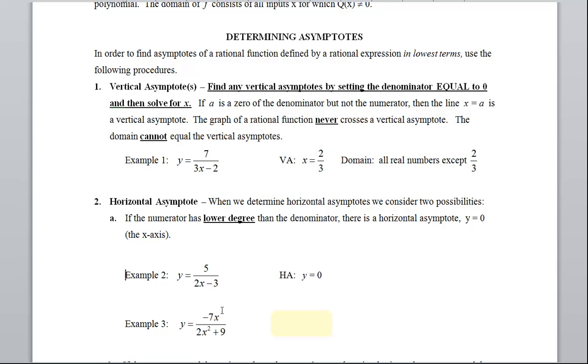Now in example three, my degree in the numerator is one. The degree in the denominator is two. When the degree is lower in the numerator than denominator, automatic, y equals zero.